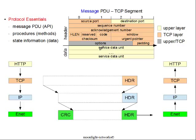The service data unit is really a segmentation of the information coming from the upper layer such as HTTP. Of course other protocols besides HTTP use TCP — FTP is one example. But we'll focus here on HTTP.